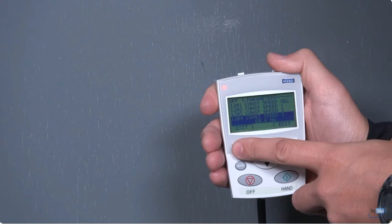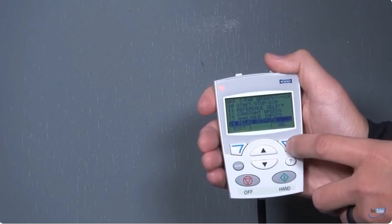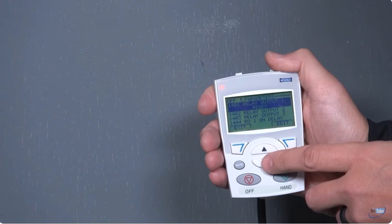These are all interchangeable, so this will be what the air balancer would change for your low speed minimum position and then your high speed position. They can change the hertz ratings on either of those two. Constant speed 1202 and constant speed 1203 are what the air balancer would change. We're going to exit out of the 12 parameters. Now we're going to go to parameter 14.